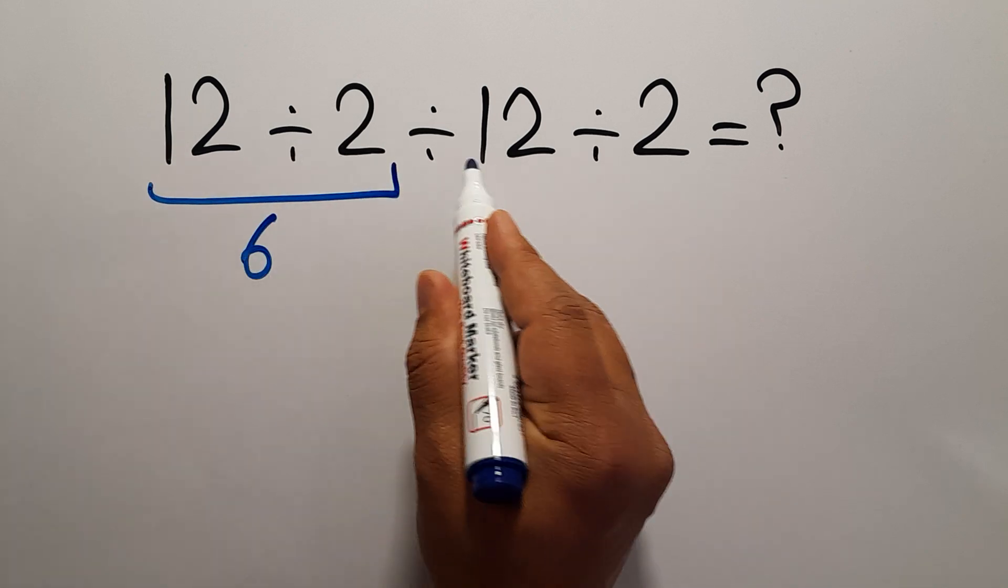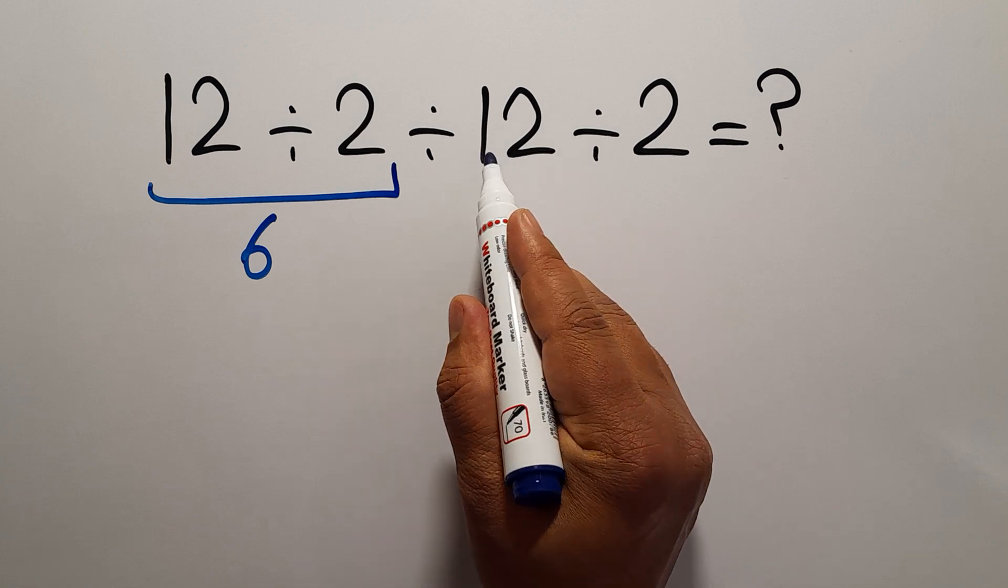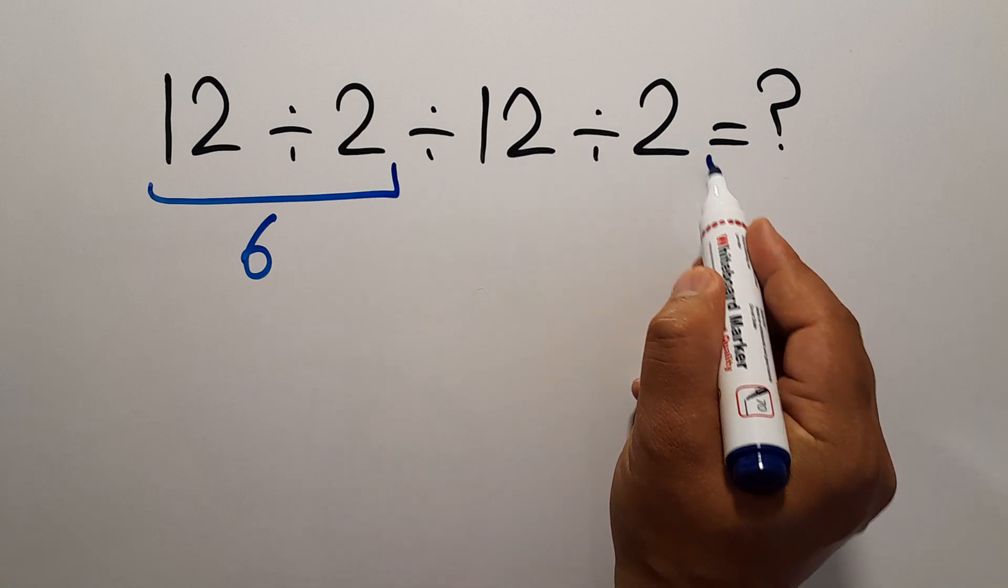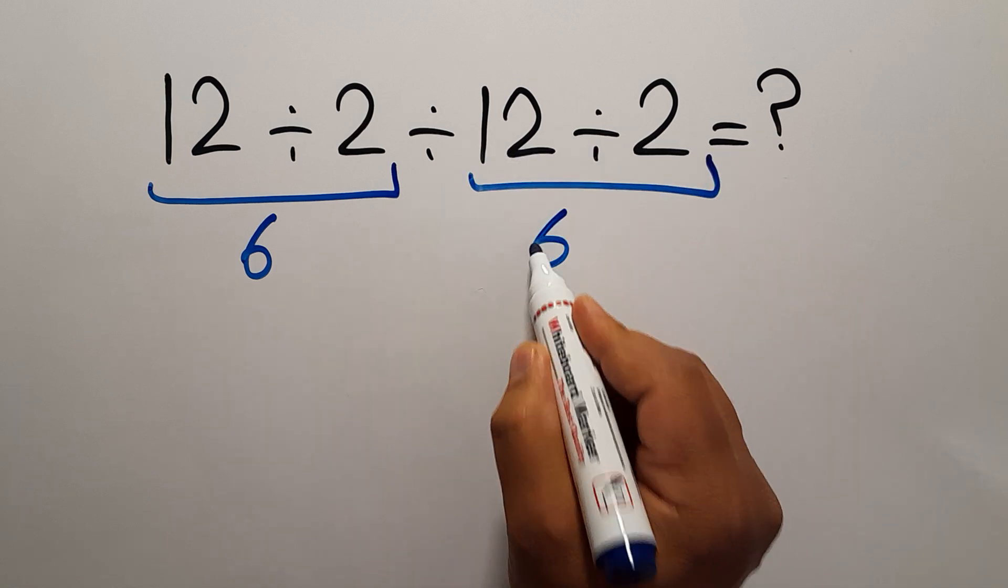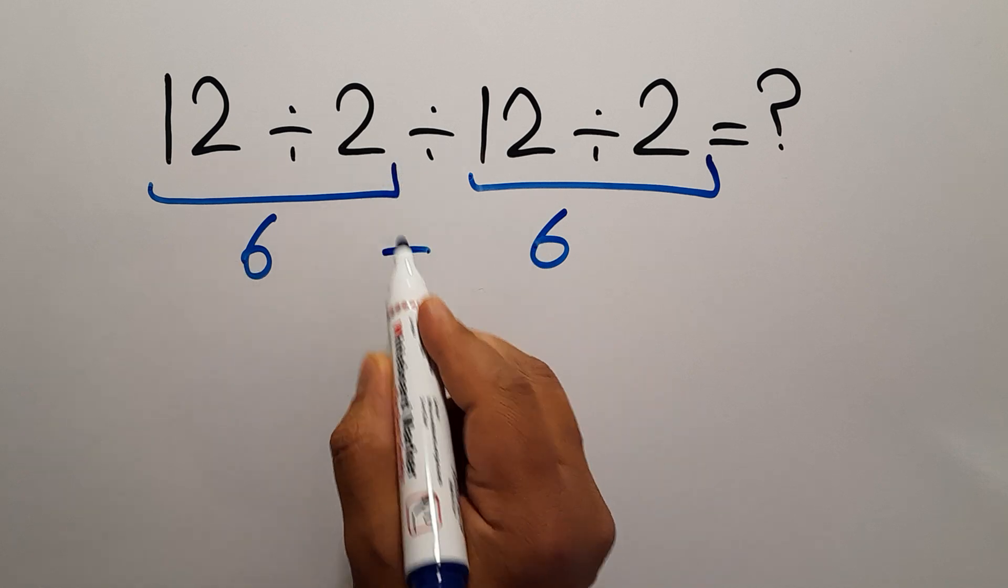is just 6. And here we have again 12 divided by 2, which equals 6. So 6 divided by 6...